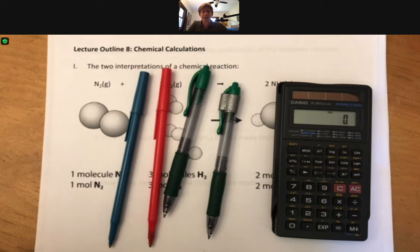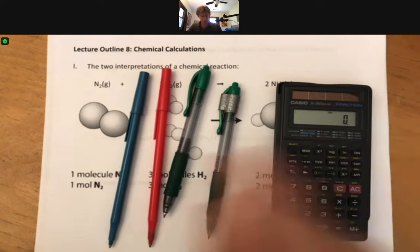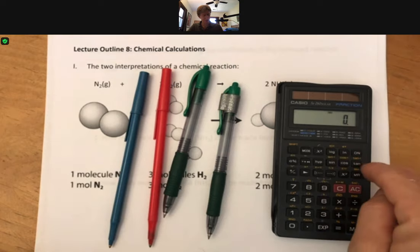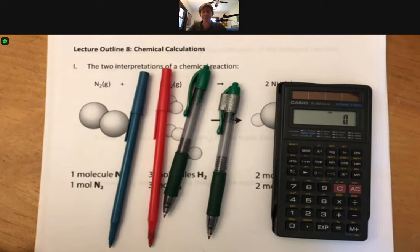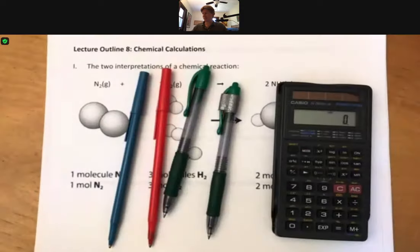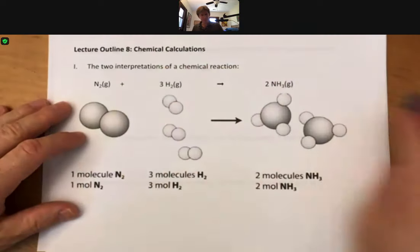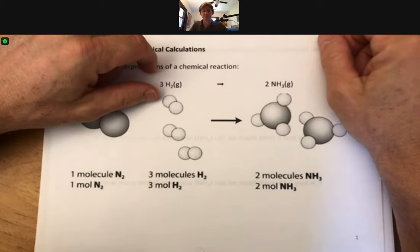This is Lecture Outline 8, Chemical Calculations. I've got four different colors of pens here. We're going to need our calculator, our scientific calculator, quite a bit. And I've got my periodic table on standby over here. So I think I'm all ready, and hopefully you are too.